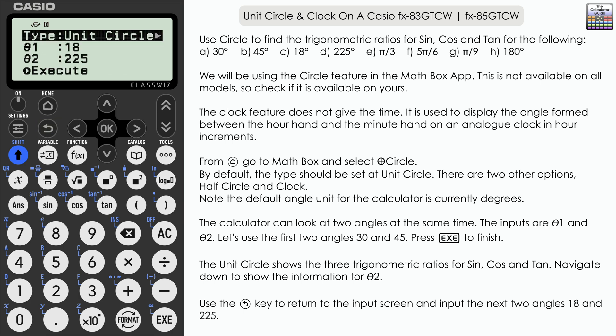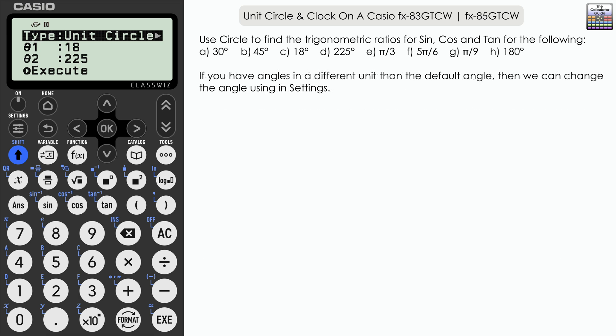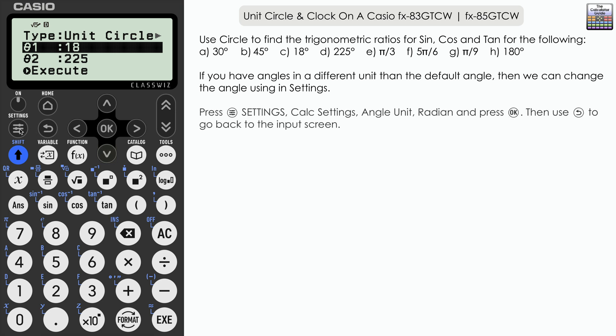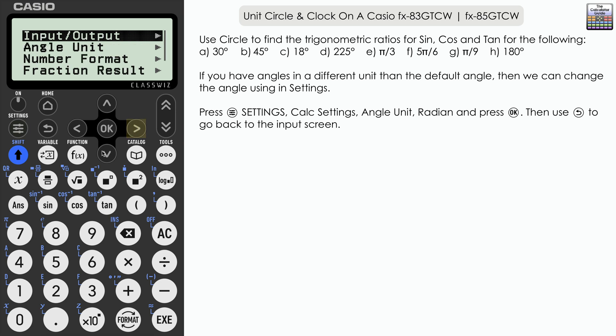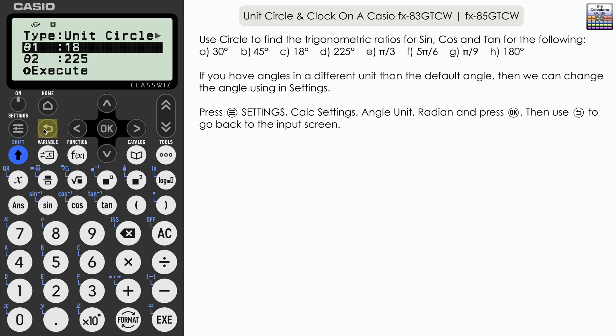Let's return back to the input screen. What if we have an angle in a unit other than degrees? Well there's two options essentially. The first one is that we can change the default setting of the angle within the calculator to radians. Let's do that now: settings, then calc settings, angle unit, then change from degree to radian, press OK, and press the return key to go back to the input screen.